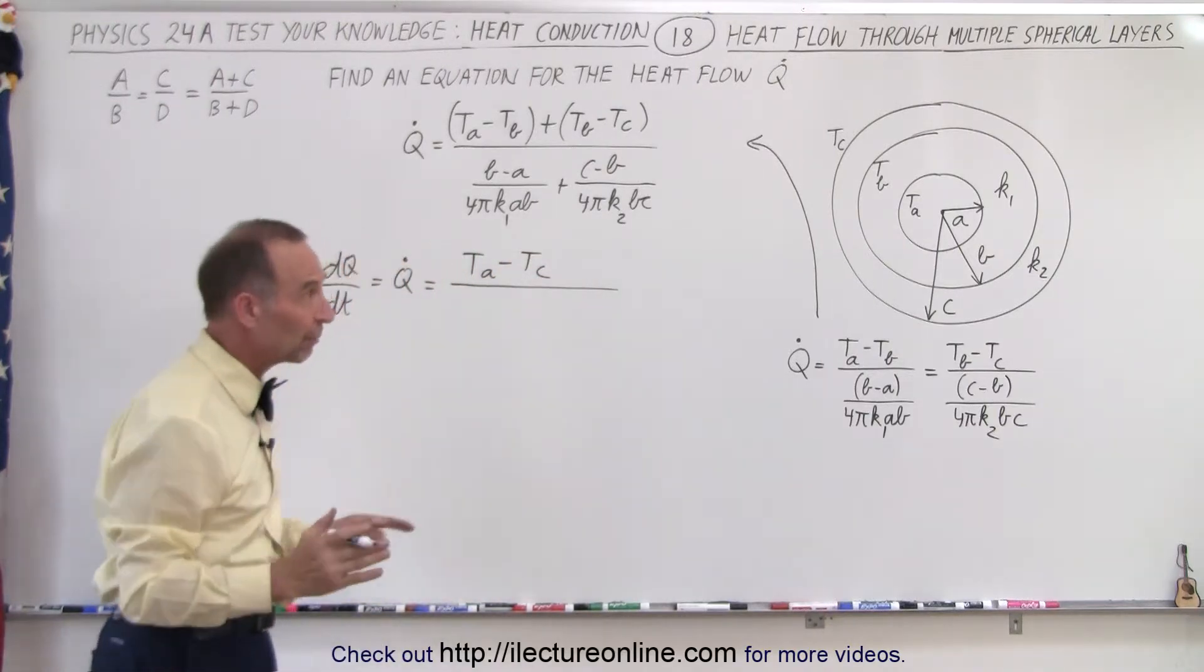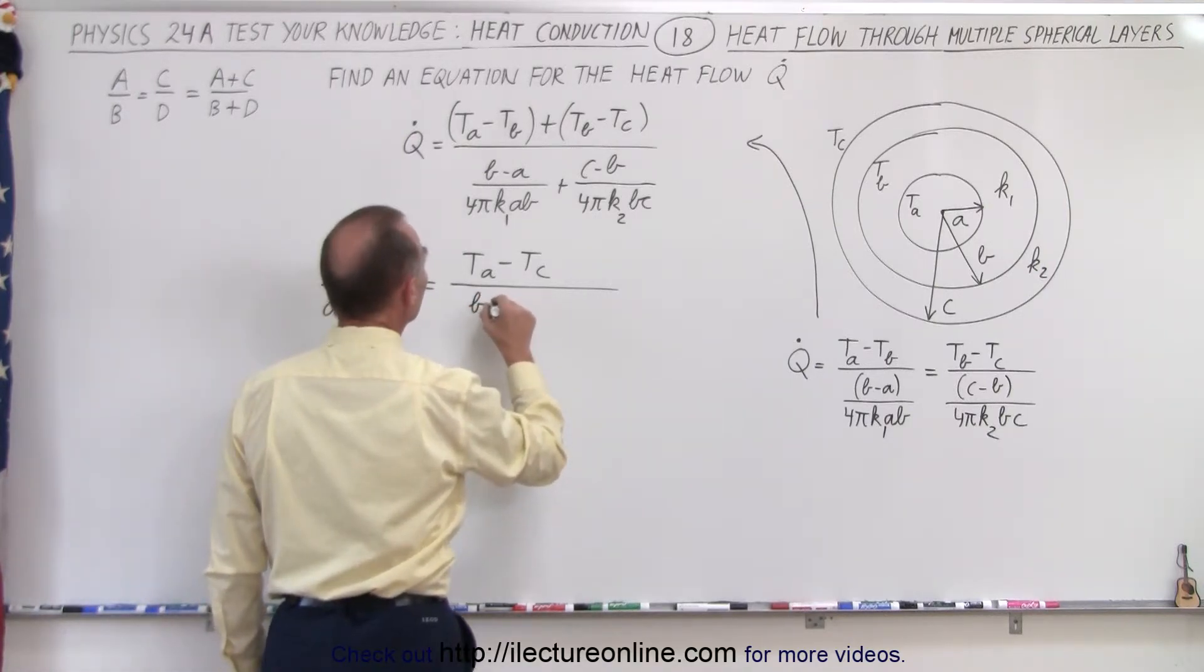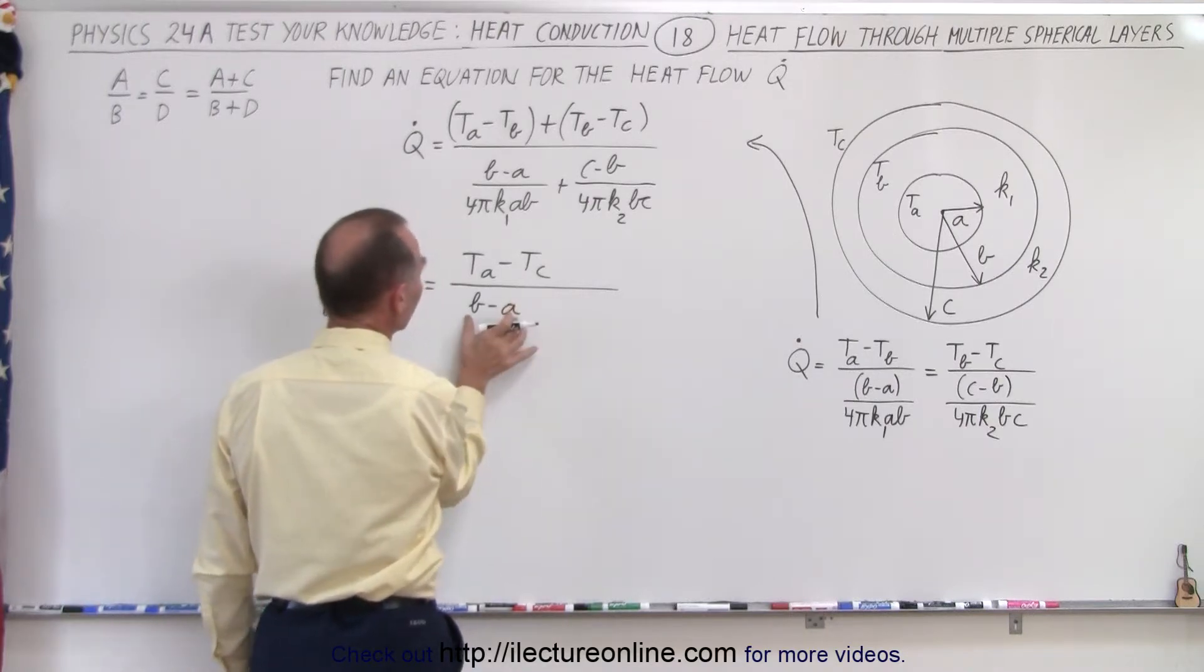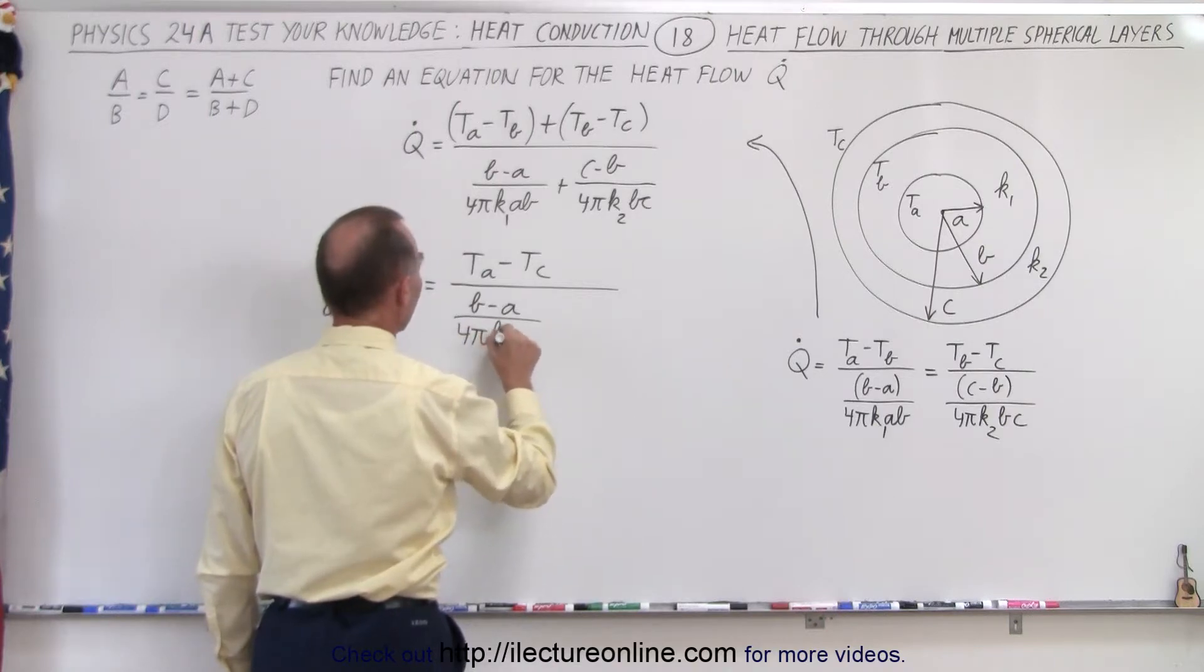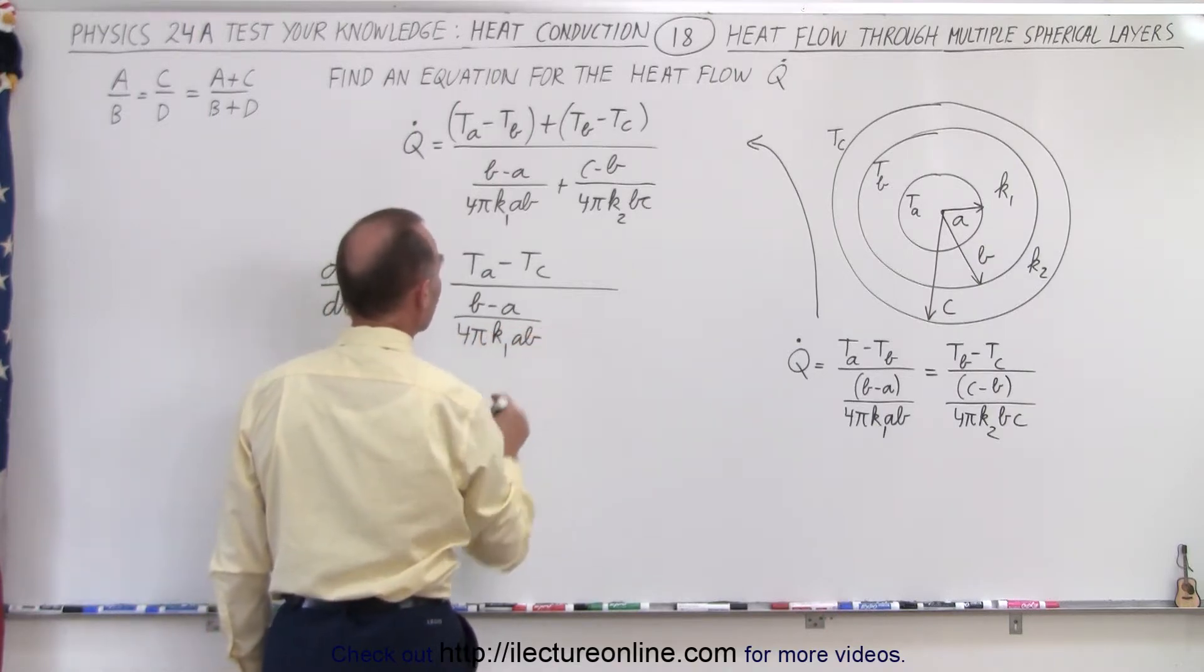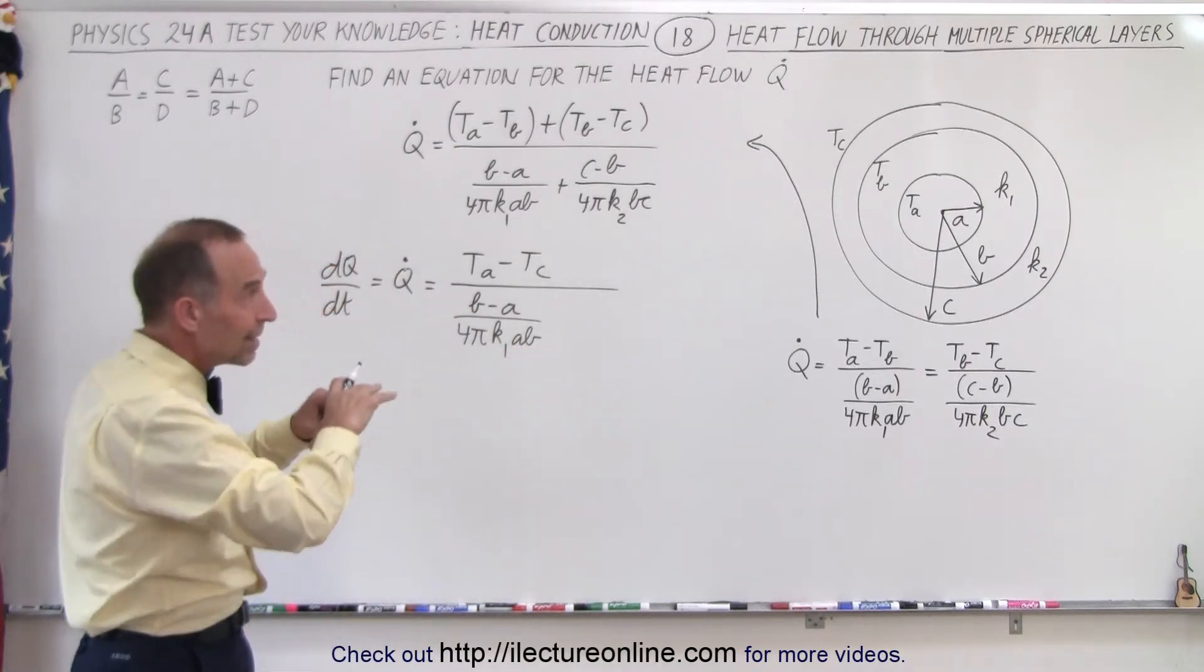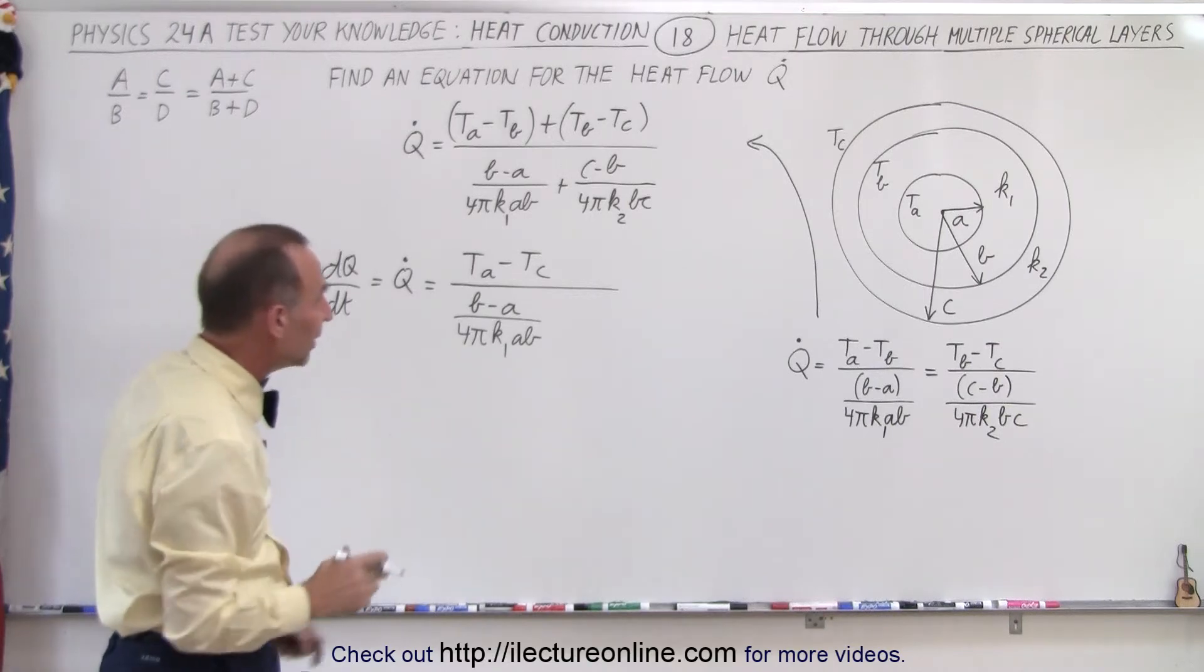Divided by what we call the heat resistances of each individual layer. So this would be the thickness of the first layer divided by 4πK1 times AB. And notice that 4π times AB is essentially the typical radius or typical cross-sectional area of the inner sphere.